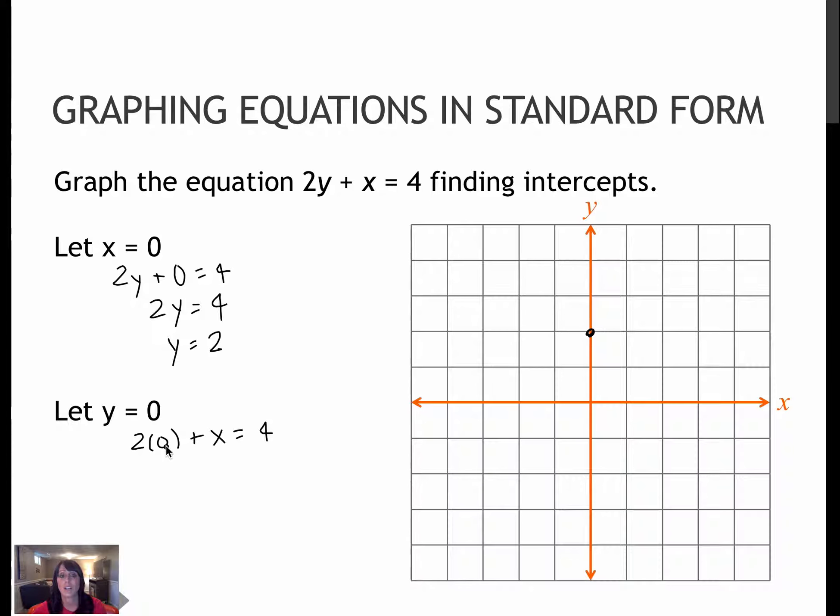And if I let y equal 0, that's 2(0) + x = 4. 2 times 0 is 0, and 0 plus x is x, so x must be 4. So that's this linear equation.